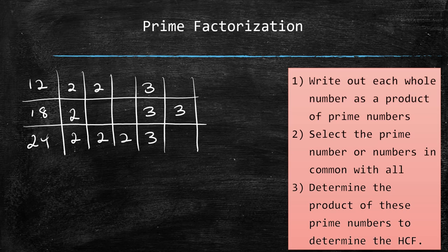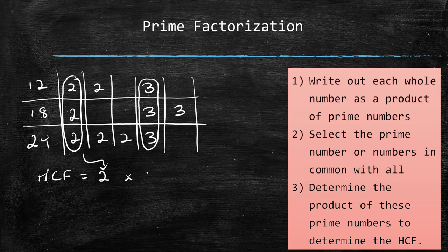Now select the prime number or numbers in common with all. We can see right away that 2 is in common with all, and 3 is in common with all. Then determine the product of these prime numbers to determine the HCF. The HCF will be 2 multiplied by 3, which is 6, the same as the previous answer.